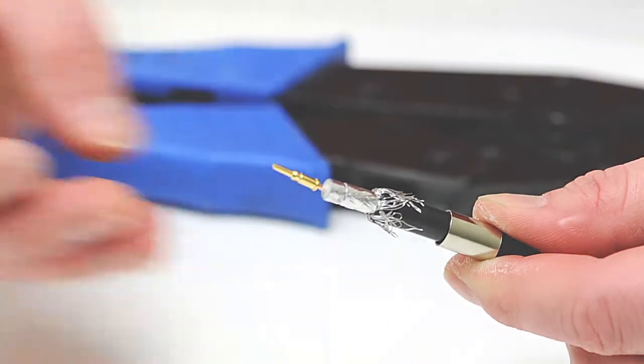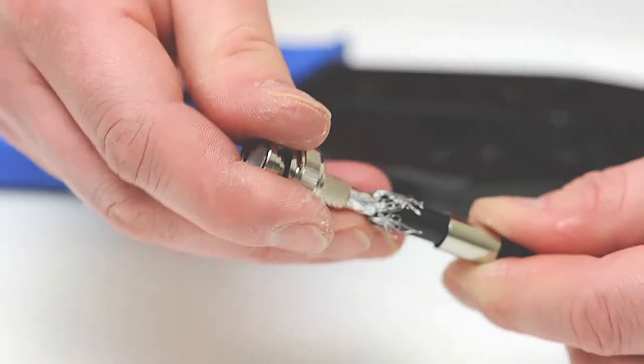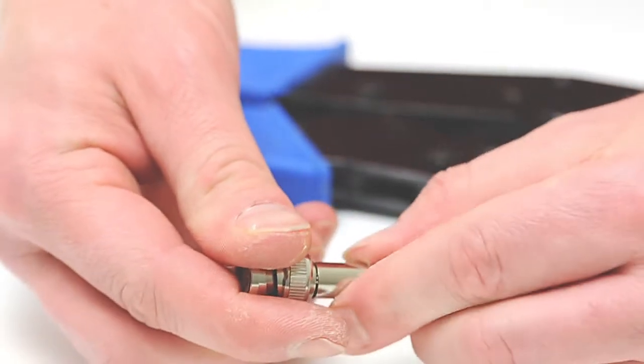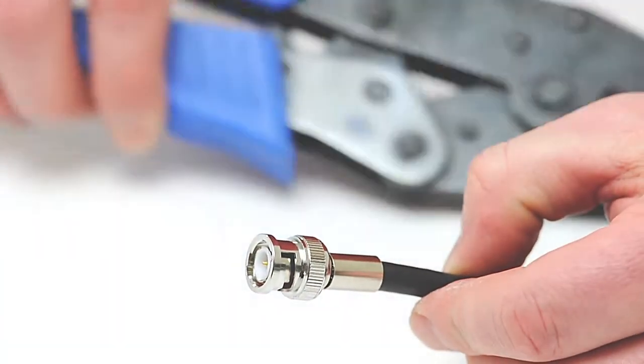Next, take the BNC housing and slide it all the way onto the cable. Slide the ferrule back over the jacket making sure it holds the braid onto the connector.